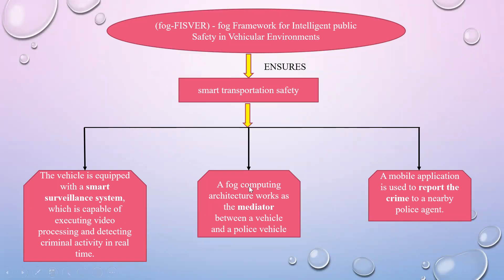This is derived using a Fog Computing Architecture, which acts as a mediator between the vehicle — such as one that is over-speeding or has hit another car — and the police vehicle. All processed data is reported to the police agent through a mobile application developed for police to monitor any registration of crime.